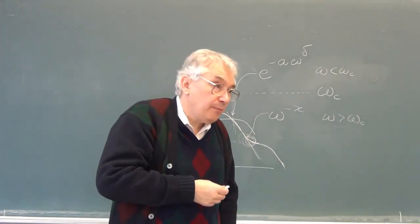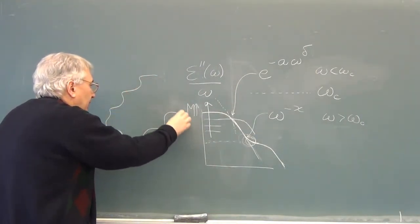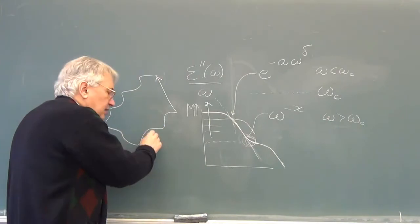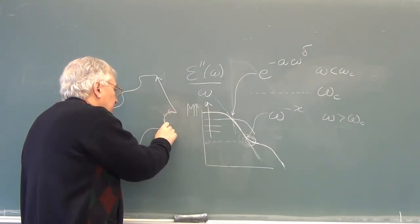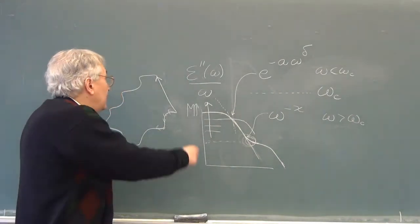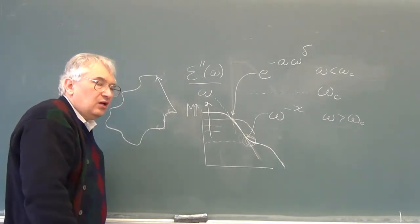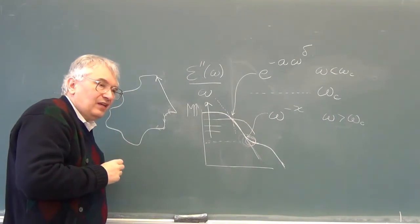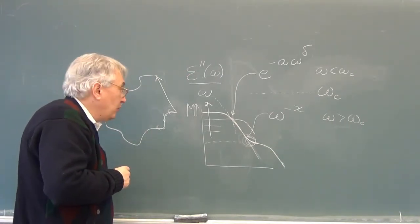There is nothing in the measurements that would suggest that the high-frequency process does not also extend into zero frequency. So what I've now shown you is a dielectric response function with two physical processes. A sensible question is: what are the two physical processes? Here is a polymer chain with an end-to-end vector. This is cispolyisoprene, composed of molecular subunits with a dipole component along the backbone, all linked up more or less head to tail. Therefore this vector from one end to the other is, up to a multiplicative constant, the dielectric dipole vector of the molecule.